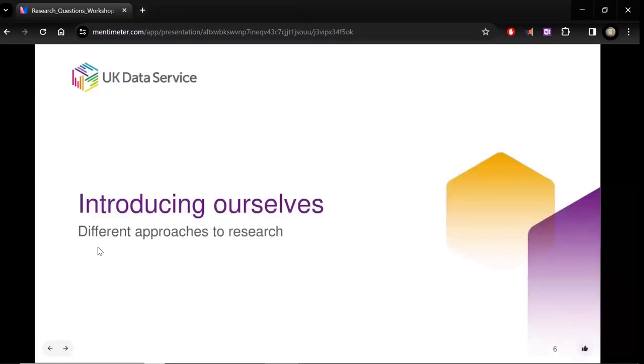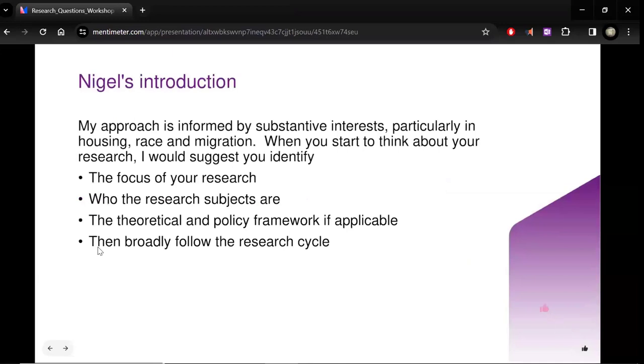So here we go. Here's me first, I think. So I generally start with a substantive set of interests. So most of my research is around housing rates and migration. And just thinking about how you start, I'd suggest you think about first of all, what's the focus of your research, who your research subjects are, and any theoretical or policy frameworks that are applicable to the research you're going to do. And then broadly follow the research cycle, which I'll cover in more detail in a little bit of time.